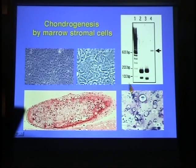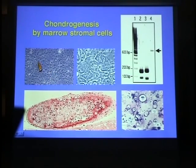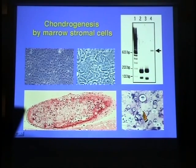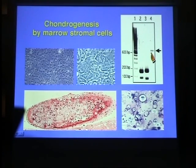Cartilage can be generated by marrow stromal cells as well as chondrocytes. We generated stromal cell line number five and injected these cells into the subcutaneous tissues. Cartilage formation was detected eight weeks after inoculation. The chondrogenic part exhibited metachromasia with toluidine blue staining. In terms of chondrocyte-specific gene expression, the cells express collagen type 2 and aggrecan as demonstrated by RT-PCR. These results clearly indicate that marrow stromal cells can generate cartilage in vivo.